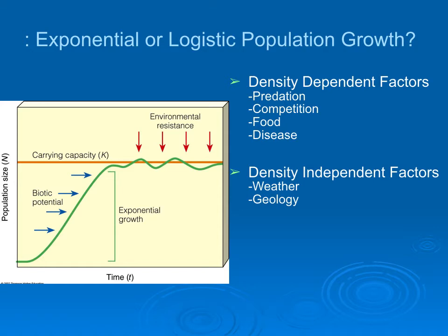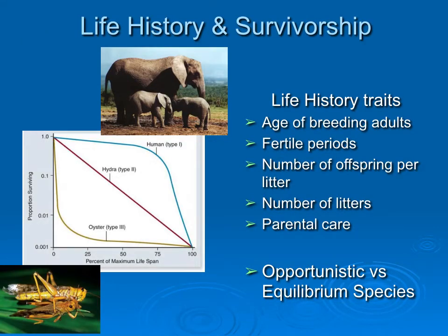This brings us to different traits that organisms have and survivorship in different types of organisms. There are different likelihoods that organisms will survive at any particular age. In some organisms, individuals have a very good chance of surviving until old age and then are likely to die — this is a Type I survivorship curve, like elephants or people. If you survive the early period, you'll have steady survival until old age. In other organisms it's more random — you have an equal chance of dying at any period, giving a Type II curve with a steady death rate.